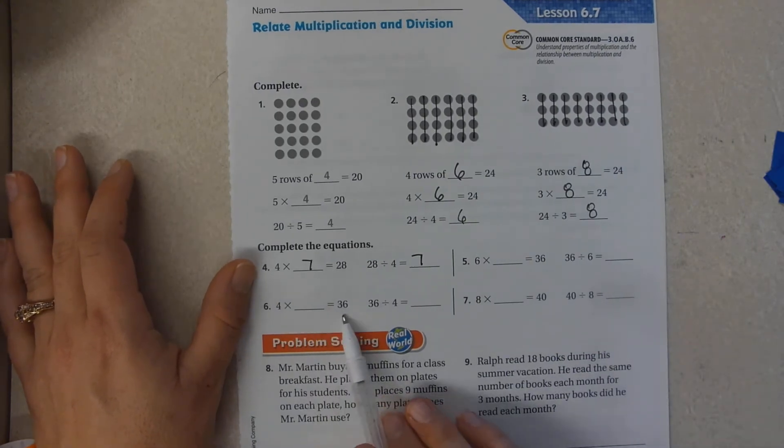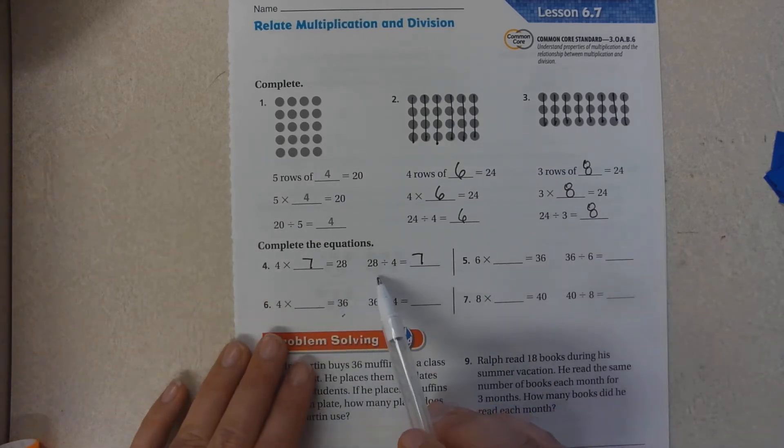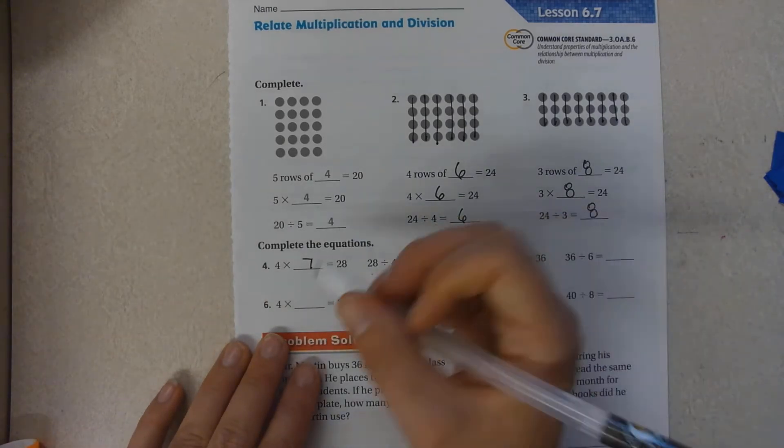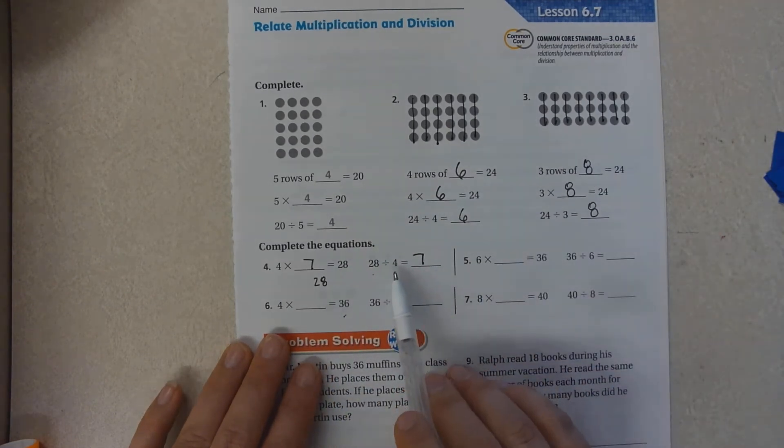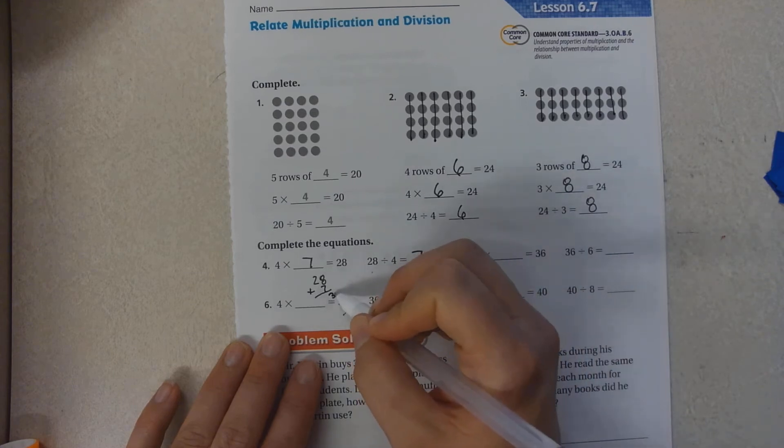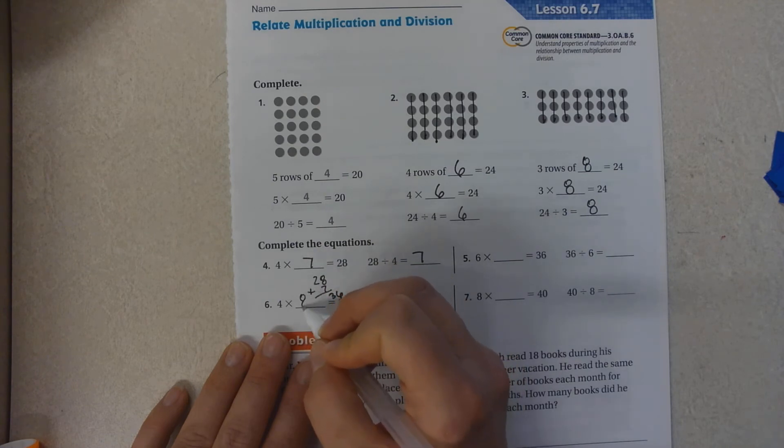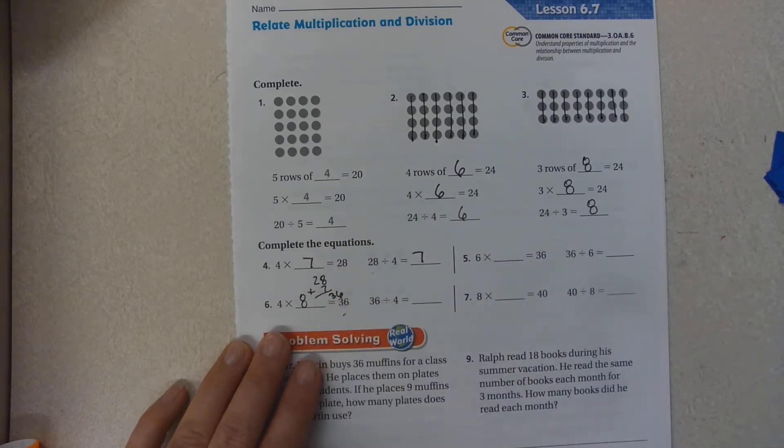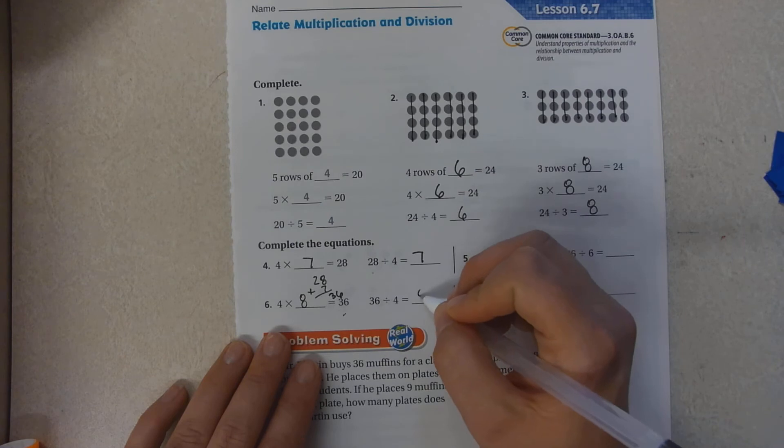4 times what equals 36? So if I know that it's 28, that's 7. So you say plus 7 more is 36, so that would be 8. I just added 7 plus 1 more group of 7 to make 8. 36 divided by 4 is 8.